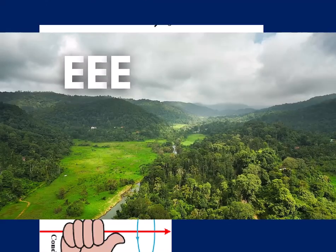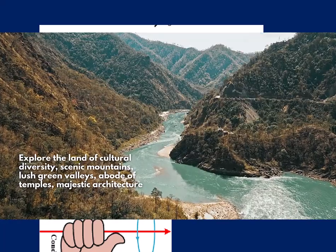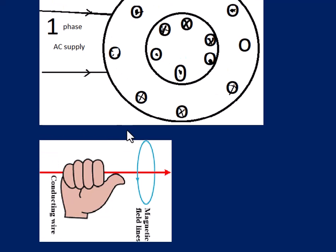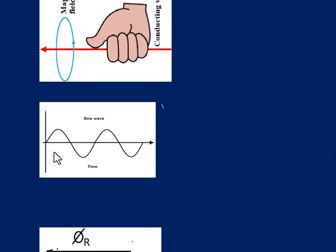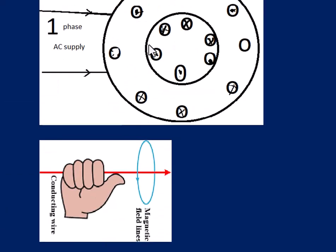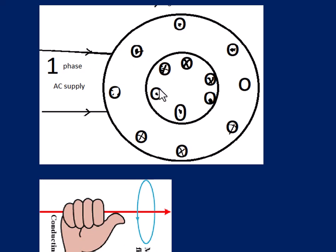A single phase induction motor has a stator and a rotor, where the rotor is a squirrel cage type. The stator is connected to the single phase AC supply, whose waveform is a sine wave that changes with time. The same flux links with the rotor conductors, and for every half cycle the polarity of the rotor currents changes. Similarly, the stator current direction also changes, so the rotor will not move because of the pulsating, vibrating condition.